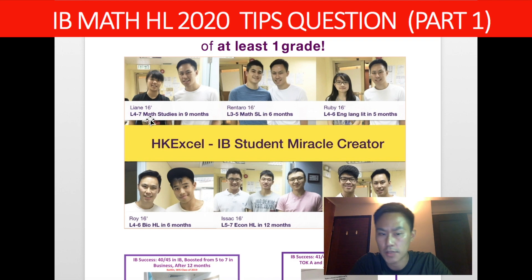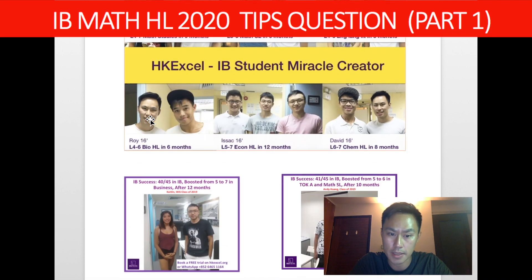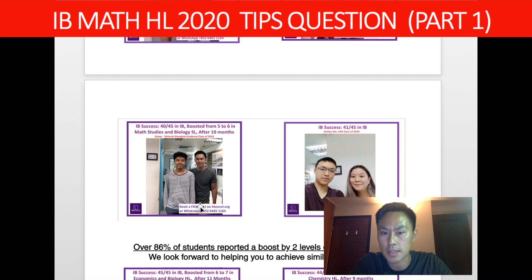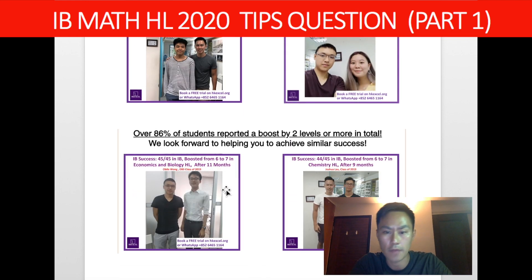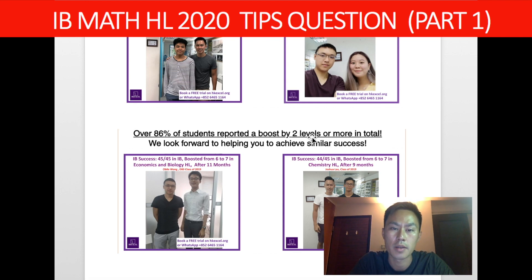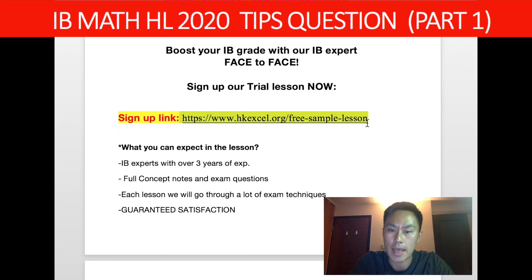For example, one student went from level 4 to level 7 in math studies after 9 months of lessons, and another got 5 to 6 in math SL. We also have students who scored 45 out of 45 and 44 out of 45. Over 86% of students report boosting at least 2 levels or more. The 2020 exam is your one last final exam — if you screw it up, you'll have to go through the new curriculum. So go to Part 2 or click the link for in-person help.